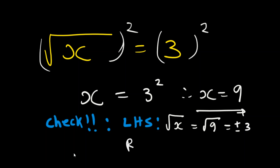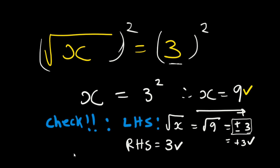The right-hand side of the equation equals 3, which is the original value. We take the positive solution from the left-hand side, getting 3, which matches the right-hand side of 3. This confirms that x = 9 is indeed the solution of x.